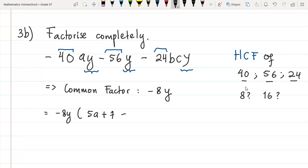And then the last one is 24 divided by 8 is 3, and b, c, y stays b and c inside, and y has been taken off.